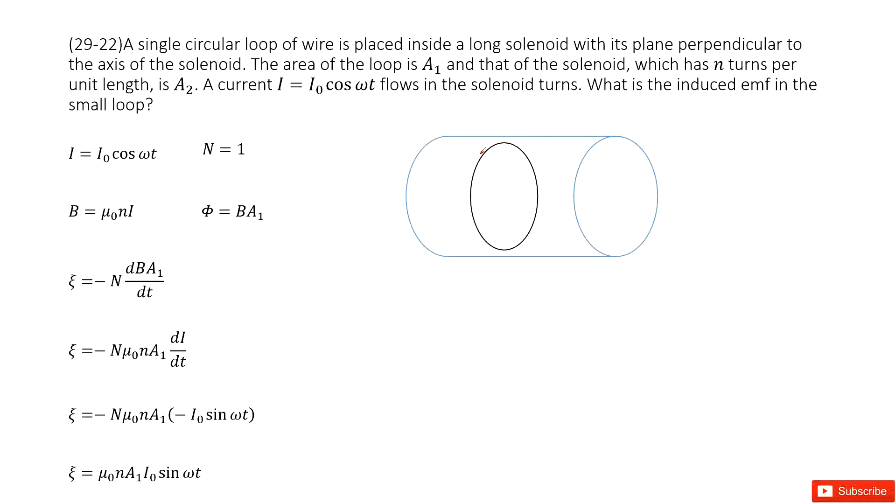Chapter 29 is about electromagnetic induction and Faraday's law. So there we can see we have a single loop is placed inside a solenoid in this way.